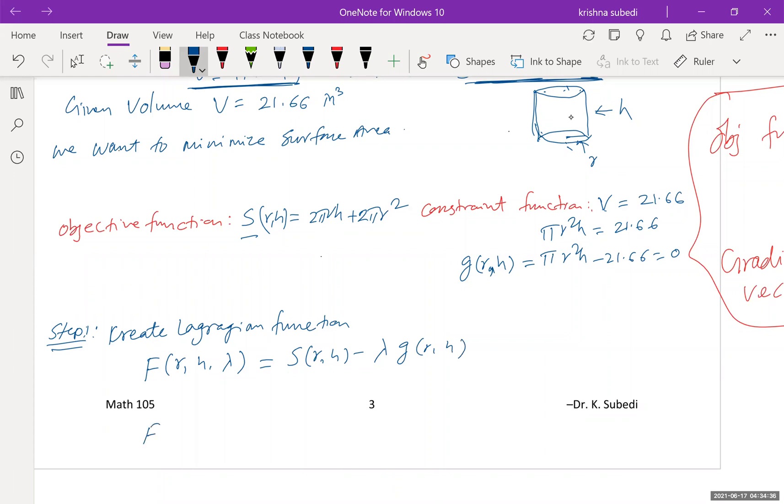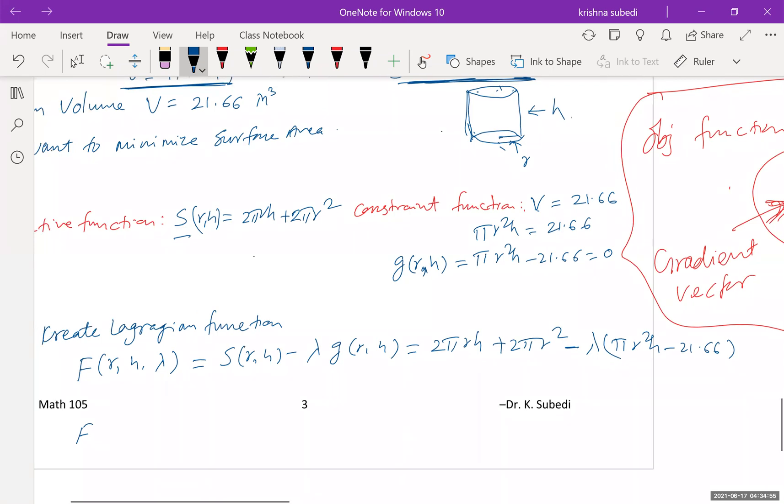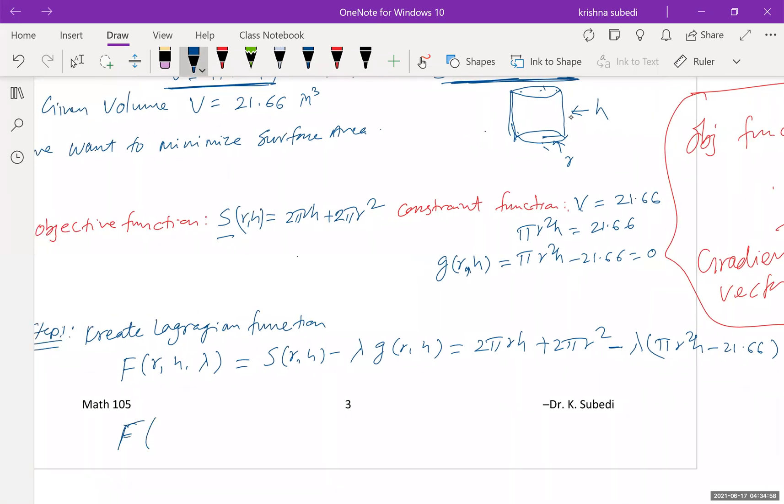And so equals, we know that this is S of r h minus lambda times G of r h. So our F, if I work it out, that will be 2 pi r h plus 2 pi r square minus lambda times pi r square h minus 21.66. So the Lagrangian function is F of r h lambda, which is given by 2 pi r h plus 2 pi r square minus lambda times pi r square h minus 21.66.